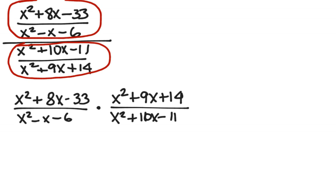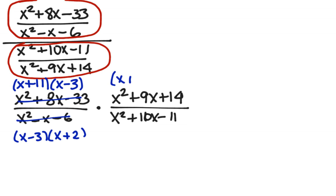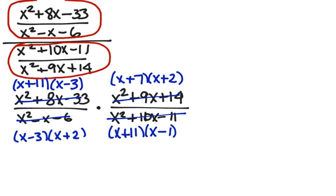Once we've done that, we can factor. The numerator of the first fraction factors into x plus 11 times x minus 3. The denominator of the first fraction factors into x minus 3 times x plus 2. The numerator of the second fraction factors into x plus 7 times x plus 2. The denominator of the second fraction factors into x plus 11 times x minus 1. Again, cross out factors that are in both numerator and denominator because they reduce: the x plus 11, the x minus 3, the x plus 2. And we have left x plus 7 in the numerator divided by x minus 1.